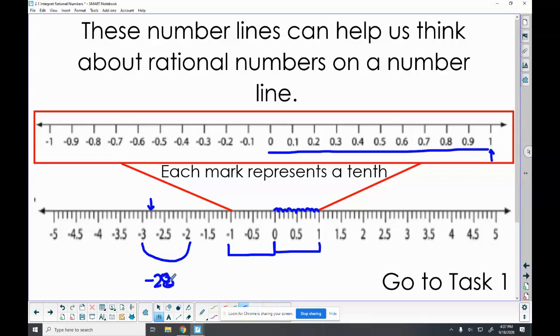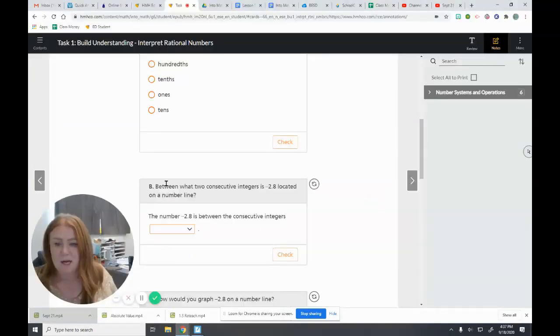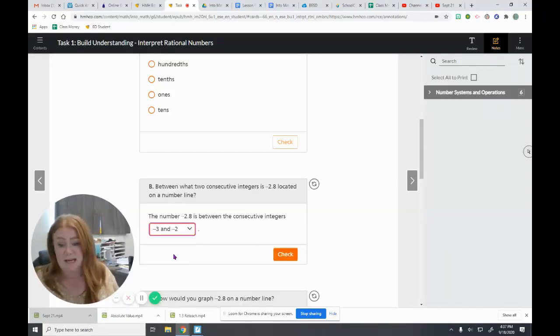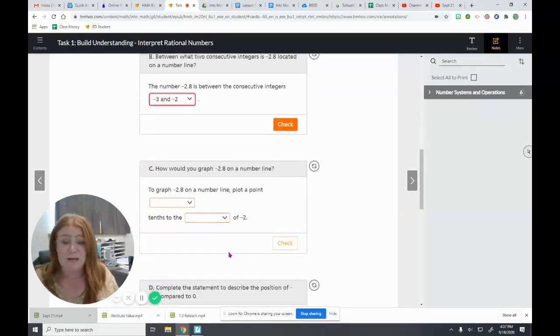Negative 2.8. I know it has to be between two, and then the next biggest number is three. It's actually smaller. So between two and three. If I come back here, I know it's between, it's not between positive. I've got to get that negative on there. Negative 2 and 3.